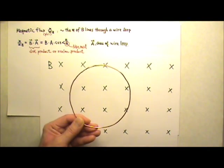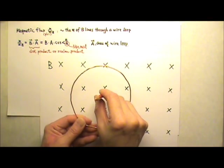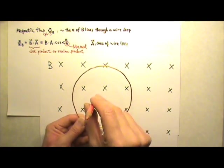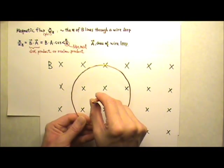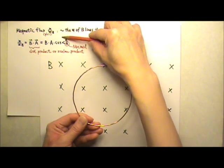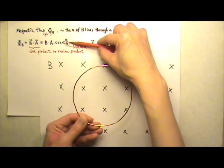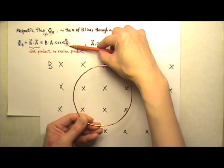However, I can also choose to use the normal vector that goes out of the paper. So B and A are in opposite directions. The angle between B and A would be 180 degrees, and cosine 180 is negative 1.